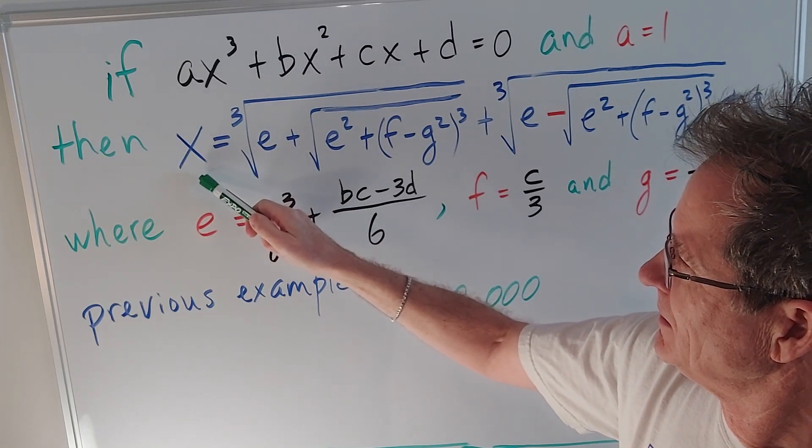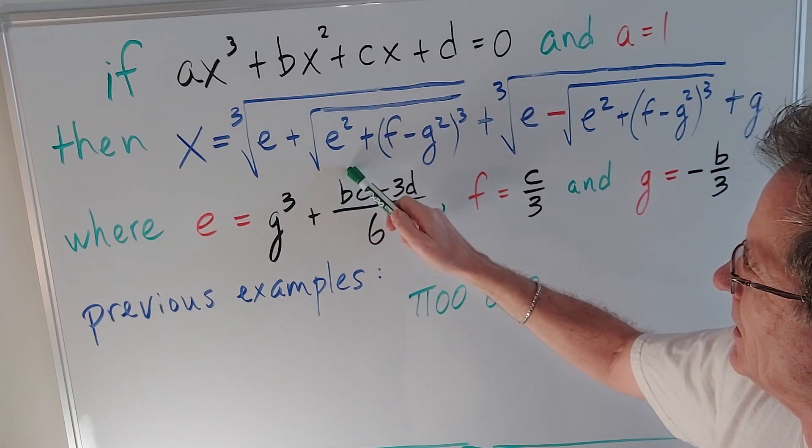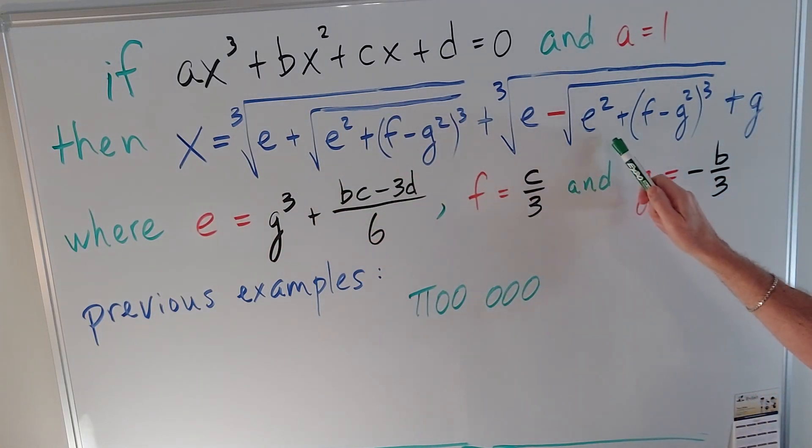Then it turns out that the solutions x are this complicated cubed root plus the same stinking thing except for this minus sign. And I must confess in the last video I put a squared here by mistake so please ignore that. Plus g.